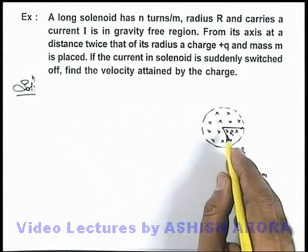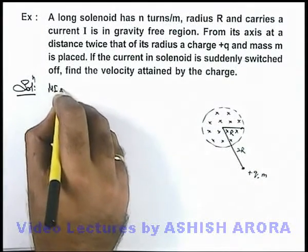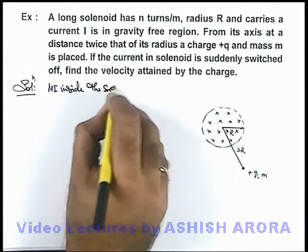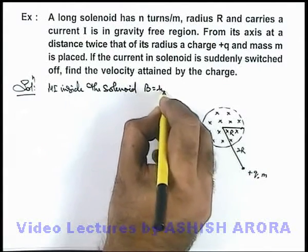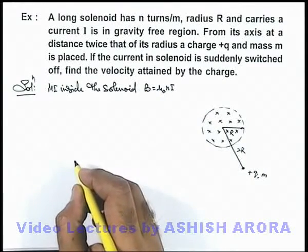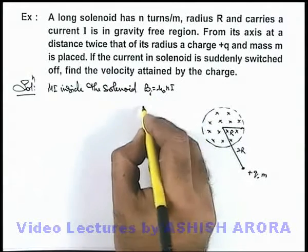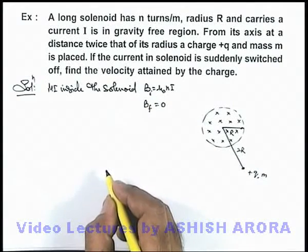Now in this situation, if we have a look at the magnetic induction, we know magnetic induction inside the solenoid can be directly written as μ₀nI. And we can see if the magnetic induction is switched off, this is the initial magnetic induction and final magnetic induction will become zero.